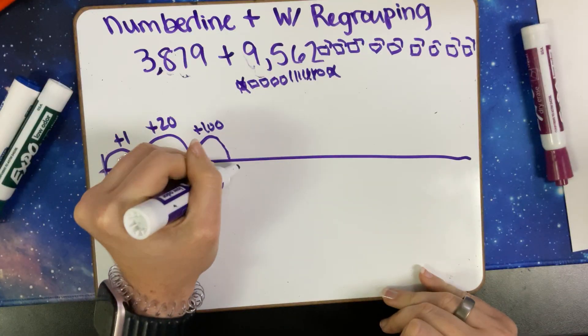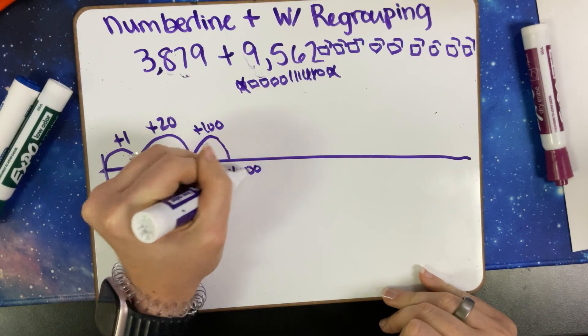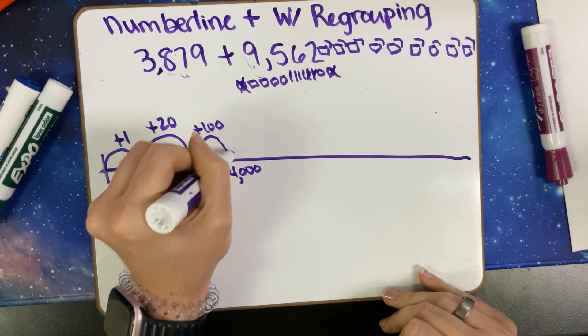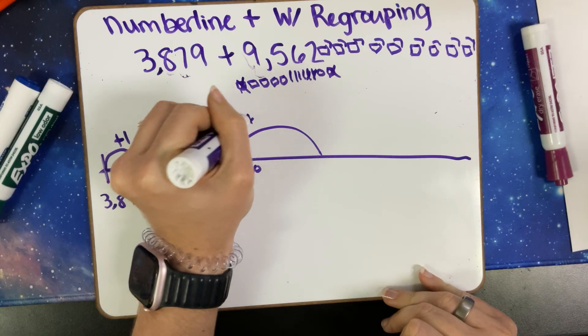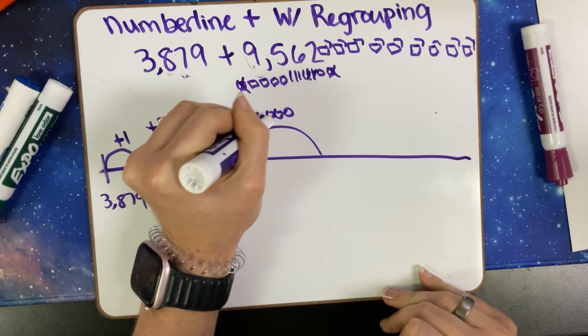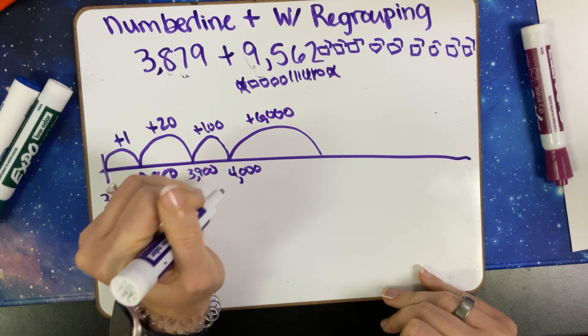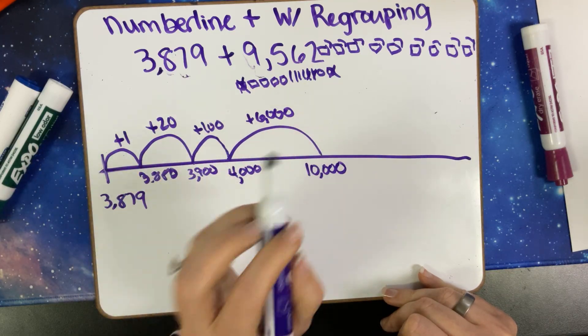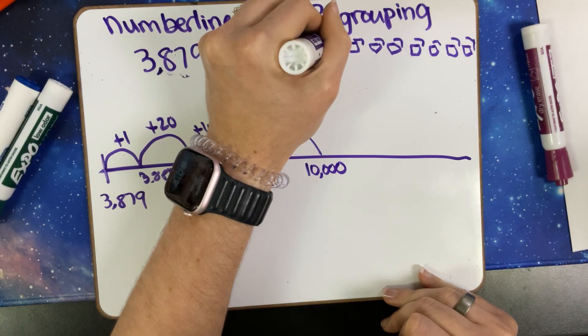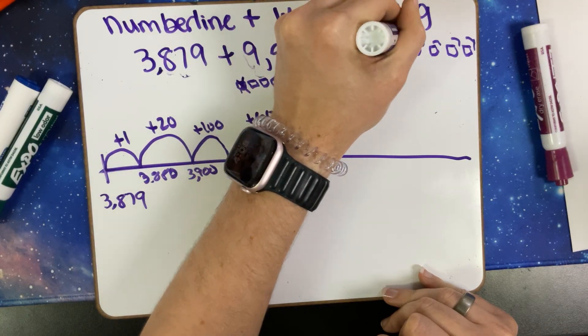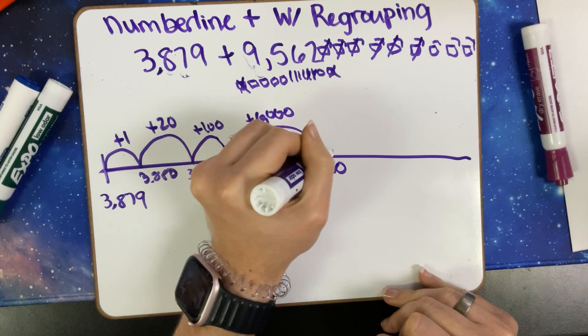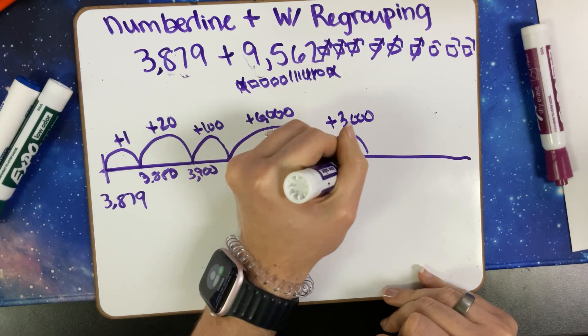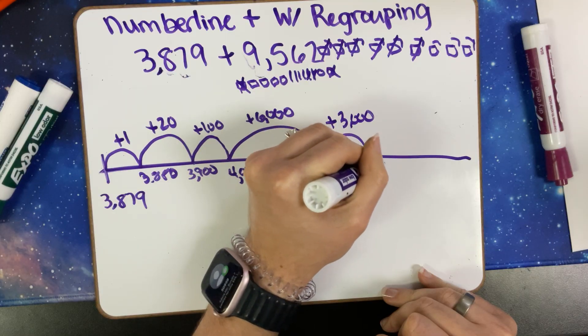Now that I'm at 4,000, I can easily add on. I'm going to start with 6,000 because I know 4 and 6 make 10. So 4,000 plus 6,000 is going to make 10,000, so let's cross off six: one, two, three, four, five, six. I have 3,000 left, so we're going to add that 3,000—I'm sorry, 13,000.